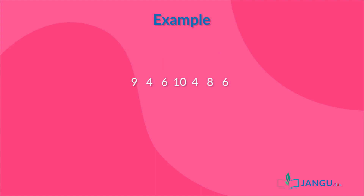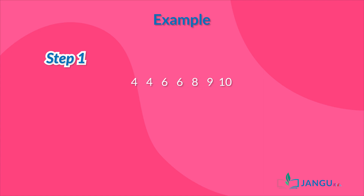and you would like to know the median of the scores, all you would have to do is: one, arrange the scores in either ascending or descending order. Let's choose ascending order for this example. This would have us arrange the numbers from smallest to biggest like this: four, four, six, six, eight, nine, and ten. Then we would look at the arranged numbers and pick the element in the middle, which is the value six. Therefore, we can say that the median is six.